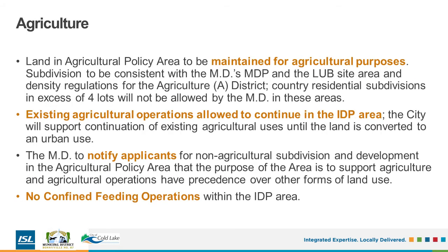Turning to agriculture: land located in the agricultural policy area will remain in agricultural use. Any subdivision proposed in these areas will need to meet the MD's MDP policies and the requirements of the MD's agricultural district. No country residential subdivisions in excess of 4 lots will be allowed in these areas. All existing agricultural operations will continue, and the city will support the continuation of existing agricultural uses until such a time as the land is converted to urban use in accordance with provincial legislation. If new non-agricultural development occurs in these areas, the MD will notify applicants that these areas are supporting agriculture and that agricultural operations have precedence over other forms of land use. Lastly, no confined feeding operations will be permitted in the IDP area.